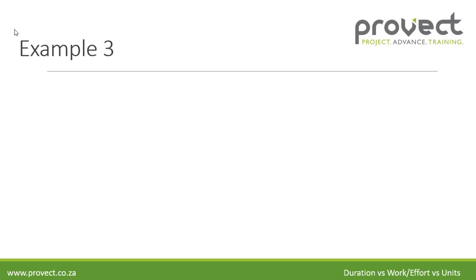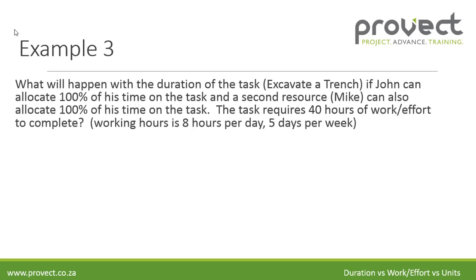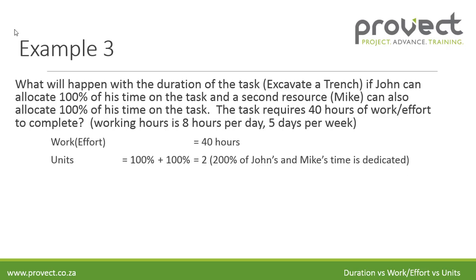Now let's look at example three. What will happen with the duration of the task to excavate the trench if John can allocate 100% of his time on the task, and a second resource, Mike, can also allocate 100% of his time on the task? The task still requires 40 hours of work or effort to complete. The work is 40 hours. The units are now 100% for John plus 100% for Mike, which is 200%, equaling two.